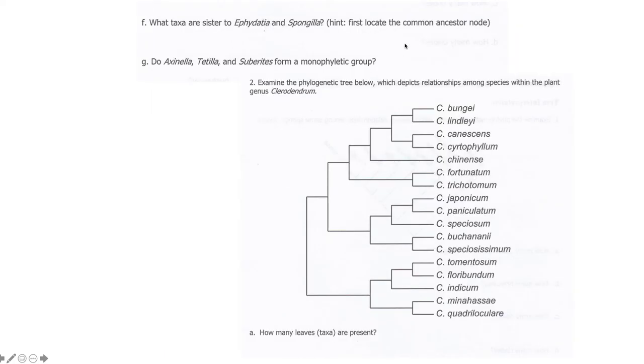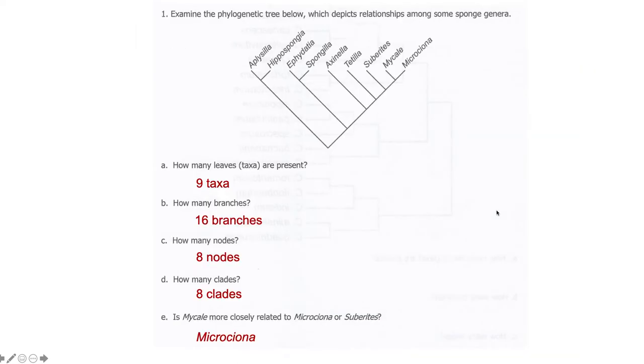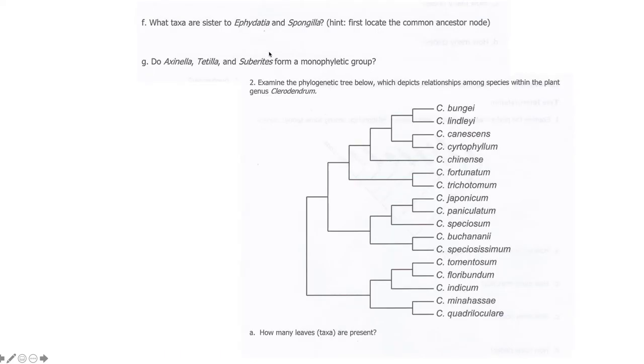So for this one, these taxa were sister to those two taxa. You'll see here. If we locate those two taxa on the tree, they are back this way. So these two, all of these would be sister. These two would not be. And do they form a monophyletic group? No.